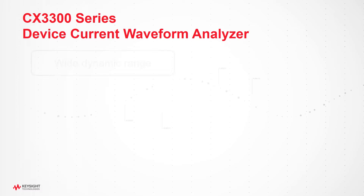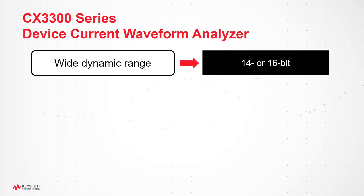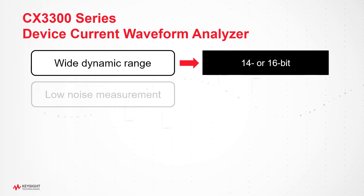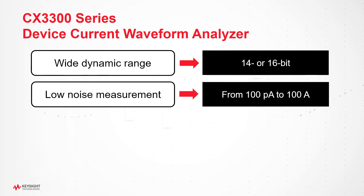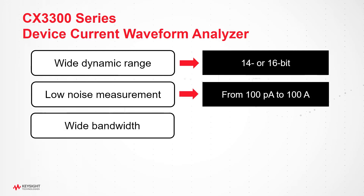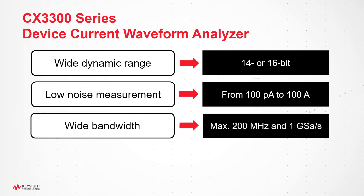The CX3300 series provides 14 or 16-bit wide dynamic range, low noise measurements from 100 picoamps, wide bandwidth up to 200 megahertz, and various analytic capabilities for effective and accurate dynamic current measurements.